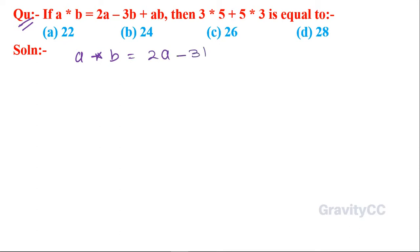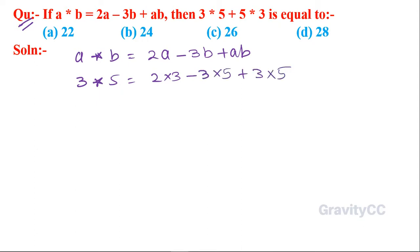3 asterisk 5 is equal to 2 into 3 minus 3 into 5 plus 3 into 5, which is equal to 6 minus 15 plus 15. Here 15 and 15 cancel, so it is equal to 6.